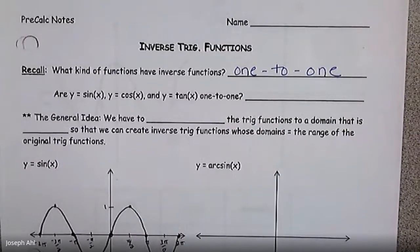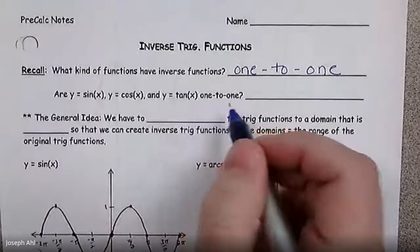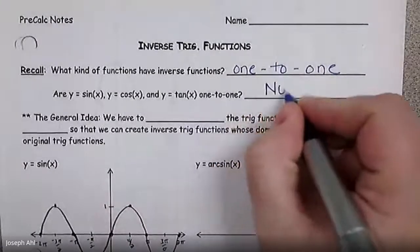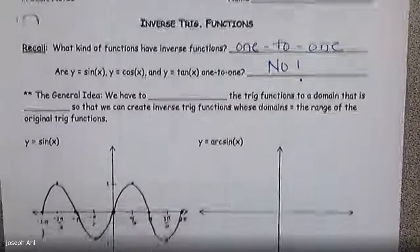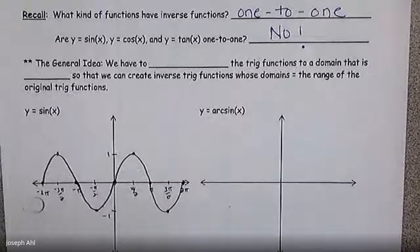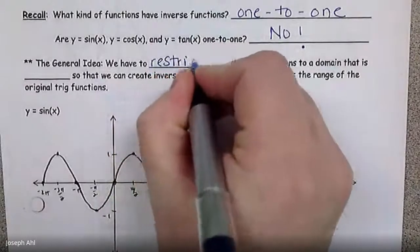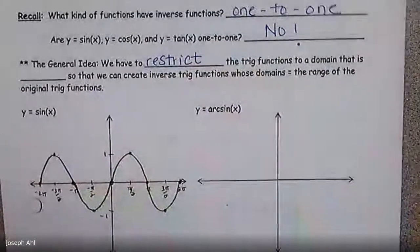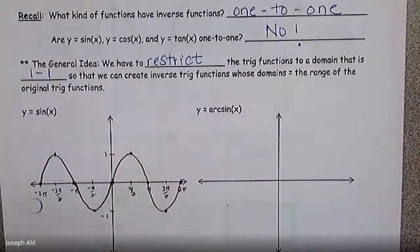Since we have a pretty good understanding of what sine, cosine, and tangent look like — are any of those one-to-one functions? The answer is absolutely not. They would all fail the horizontal line test. So here's the key idea: we are going to restrict these trig functions to a domain that is one-to-one, so that we can create inverse trig functions whose domains are the range of the original trig functions.